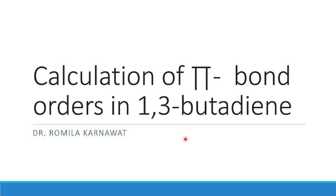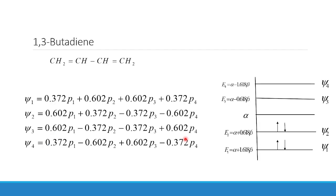Hello friends, today we will study about the calculation of pi bond orders in 1,3-butadiene system in ground state and excited state. In previous lectures we have already studied about pi bond order, its formula, and its calculation in case of ethene and cyclopropanine systems. Today we are going to calculate it for the 1,3-butadiene system.